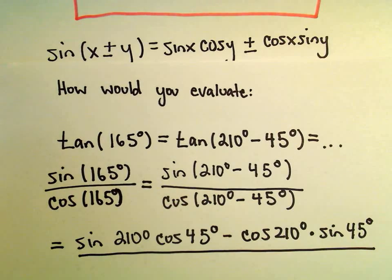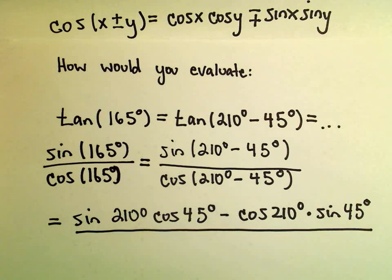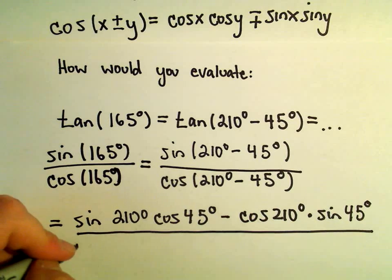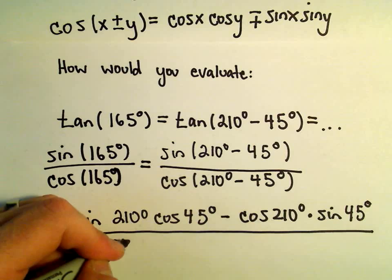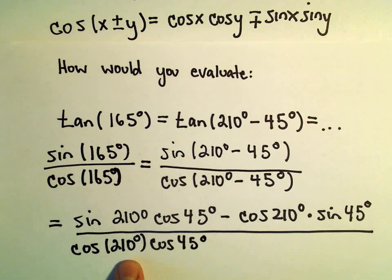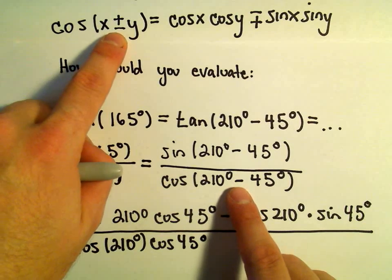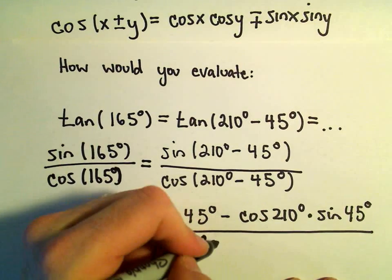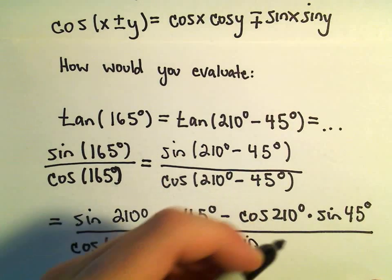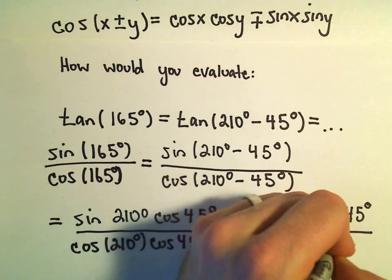Now we've got to do the same thing on the bottom. We're going to have to expand out using our cosine identity. We've got cosine of x minus y. So we'll get cosine of the first term, which is 210 degrees, times cosine of the second one, which is 45 degrees. There's a minus sign in between, and that means for the cosine identity we put a plus in between. Then we use sine of the first value, which is 210 degrees, and sine of the second one, which is 45 degrees.